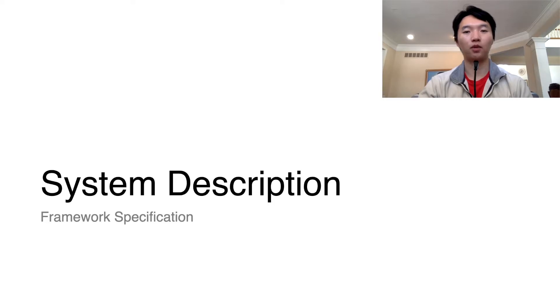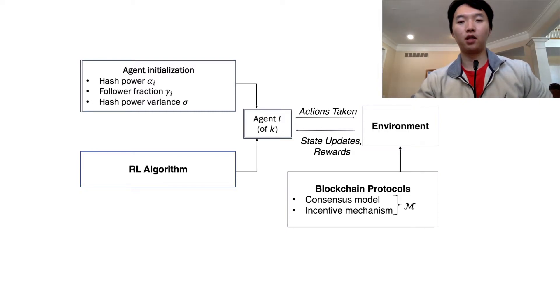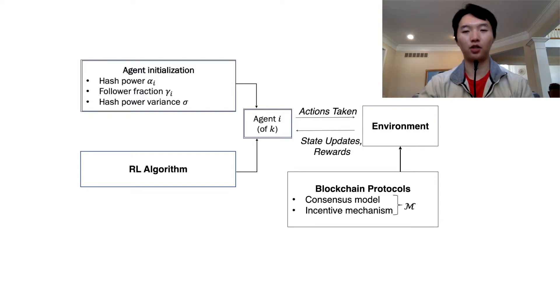In this section, we will talk about what this Squirrel framework is exactly. We give an overview of the system. First, we develop a simulation environment based on the specifications given by a blockchain protocol. Then, we define our strategic agents, each with their own initializations and RL algorithm. These agents can then interact with the environment and learn from the rewards it receives based on the actions it has taken. Note that in the paper, we provide a framework for specifying the environment, state, and action spaces.